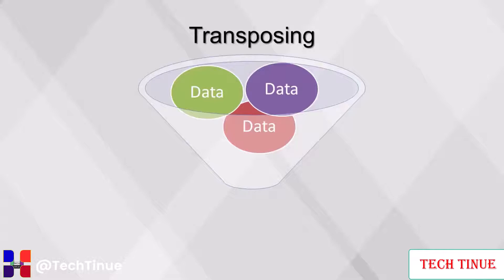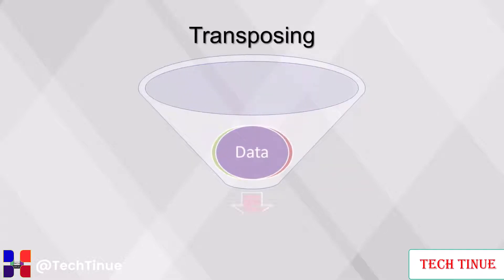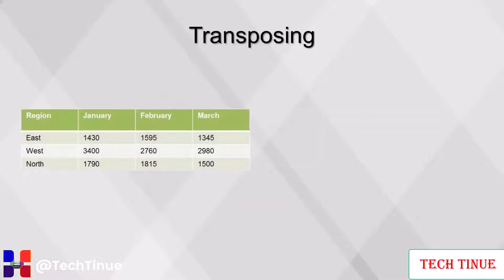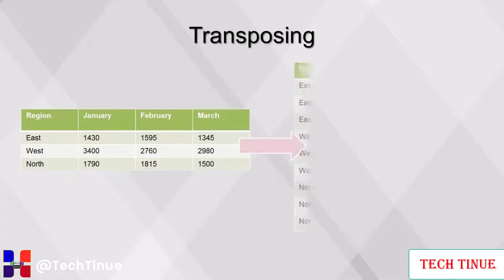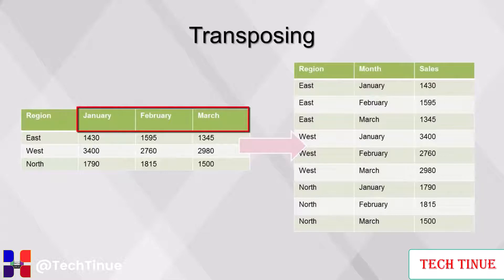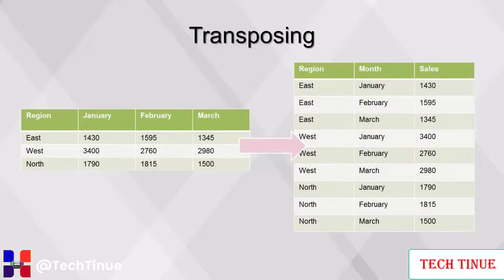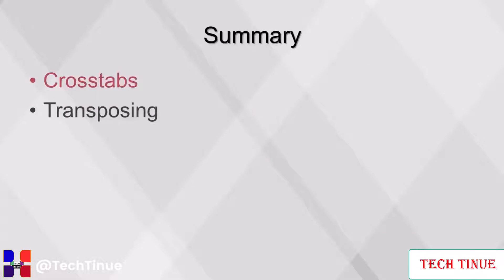Transposing can be thought of as the opposite of crosstabs — it transforms the data from a wide format into a narrow format. Typically, transposing is required after receiving financial data from a spreadsheet, as columns can be used to capture dates, locations, or categories. Once the columns, known as data fields, are transposed into one variable, the data is ready for a more sophisticated analysis. Fields that are not to be transposed are called key fields. For this example, region is the only key field, while January, February, and March are the data fields to be transposed. Transposing results in the original dataset, with the column names transformed into values for the newly created month column. This concludes our video on crosstabs and transposing.